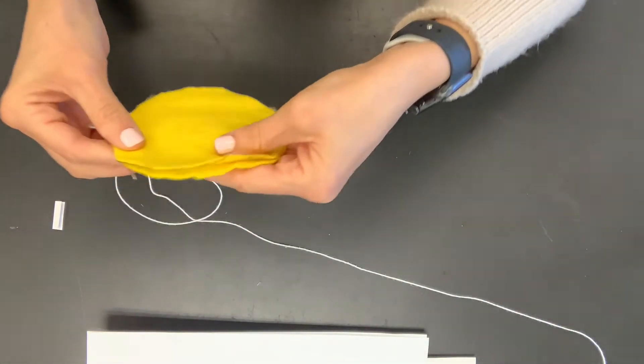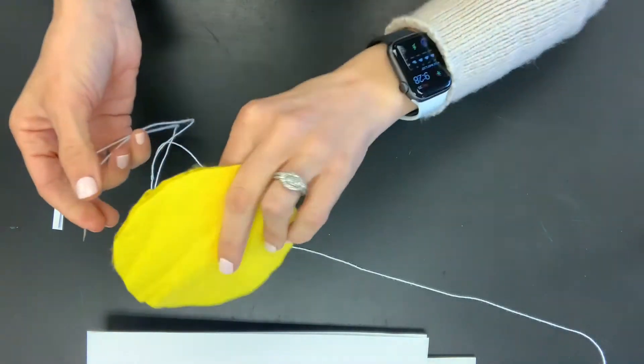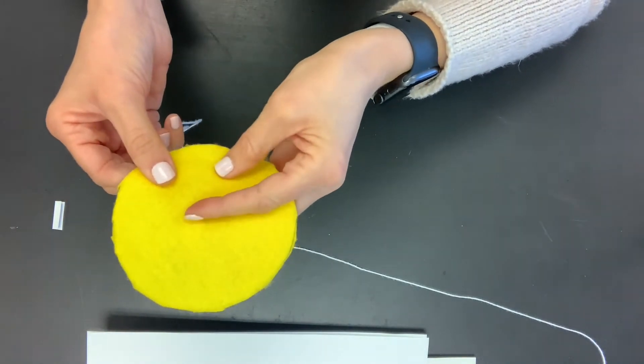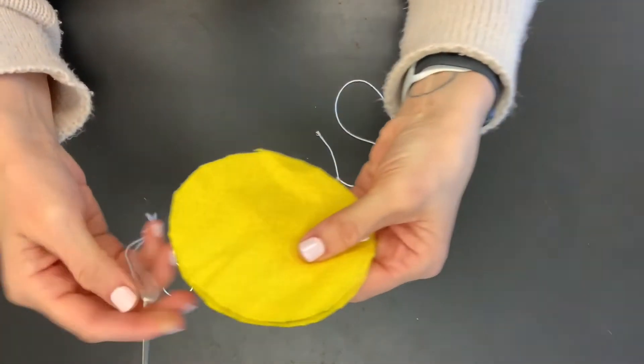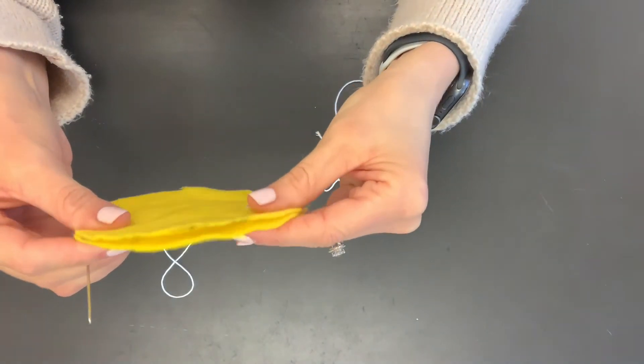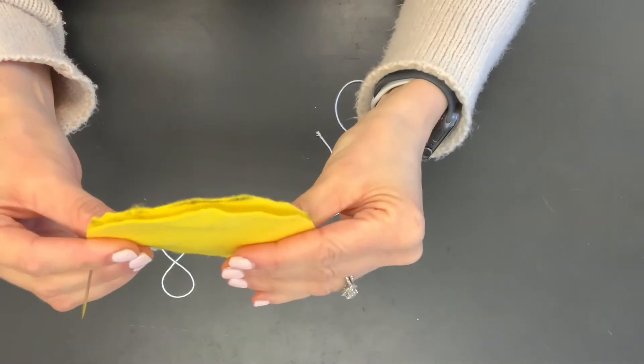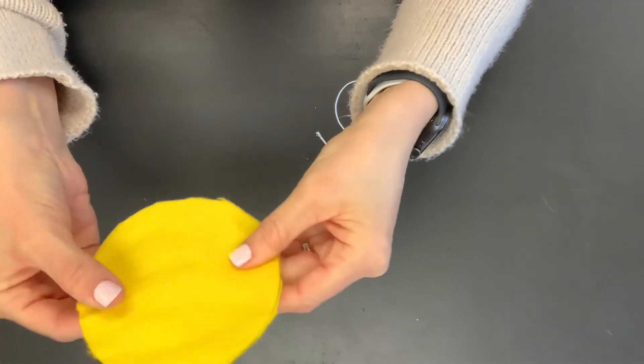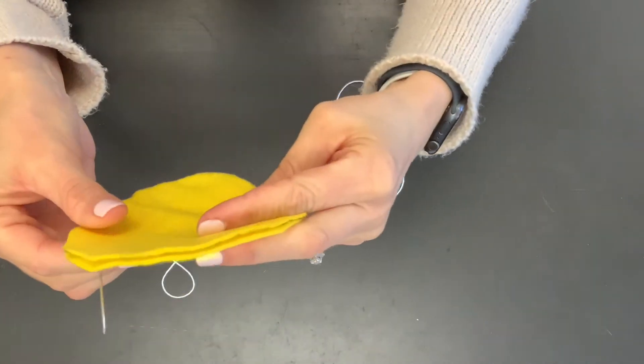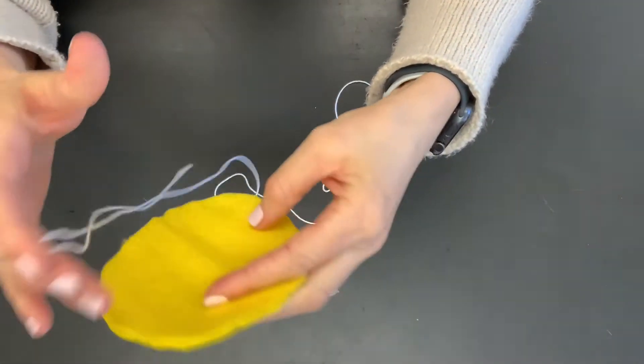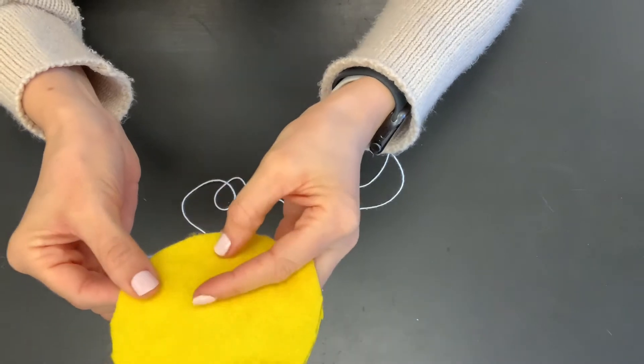So we're going to be doing a stitch called the whip stitch. It's very easy to do. For sewing, you want to keep both pieces of your yellow felt together, sandwiched in place, and you want to try to have them not move because you want them to stay together. So for the stitching, you want to stitch the edge.